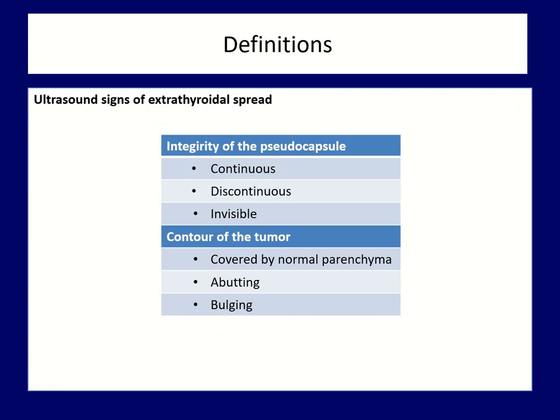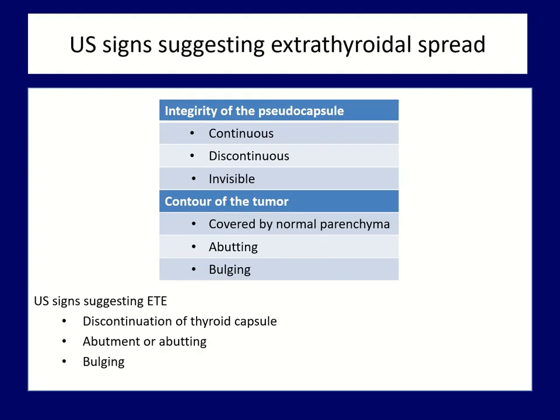What are the ultrasound signs of a possible extra-thyroidal growth? Basically, we can examine two phenomena: the integrity of the thyroid capsule and the contour of the nodule. There are three possibilities regarding the capsule — it can be continuous, discontinuous, or invisible. Three types of contours exist: the nodule can be covered by normal thyroid tissue, or if not covered, the contour can be abutting and/or bulging. Perhaps the most important consideration is that for nodules covered by normal parenchyma, the likelihood of extra-thyroidal spread is practically zero. Extra-thyroidal spread can be considered if the capsule is discontinuous or invisible and the contour is abutting or bulging.